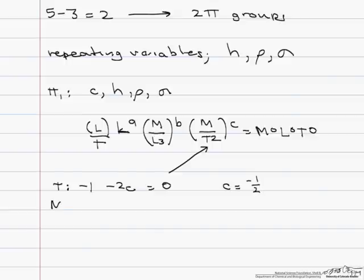Let's do M. So there is no m in the first term, but we have b plus c has to equal zero. Since we know that c is negative one half, b has to be positive one half.